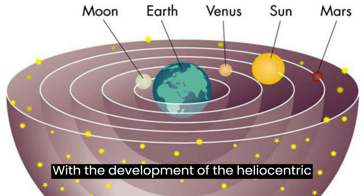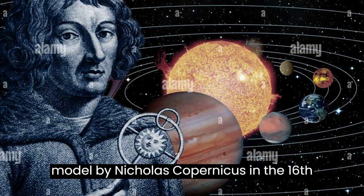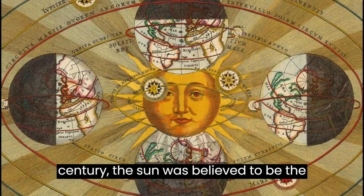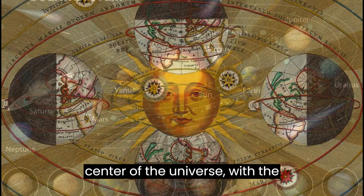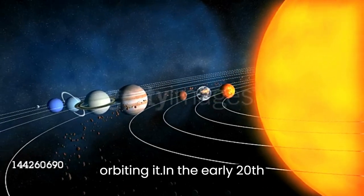With the development of the heliocentric model by Nicholas Copernicus in the 16th century, the sun was believed to be the center of the universe, with the planets, including earth, and stars orbiting it.